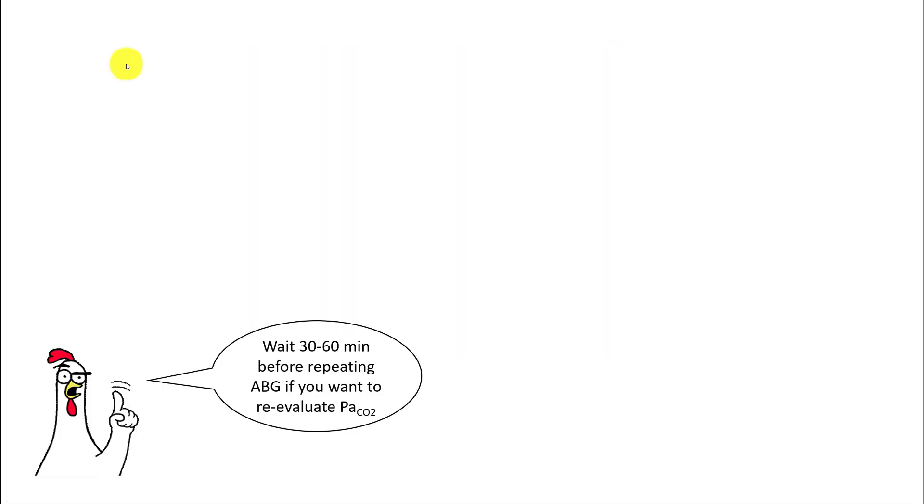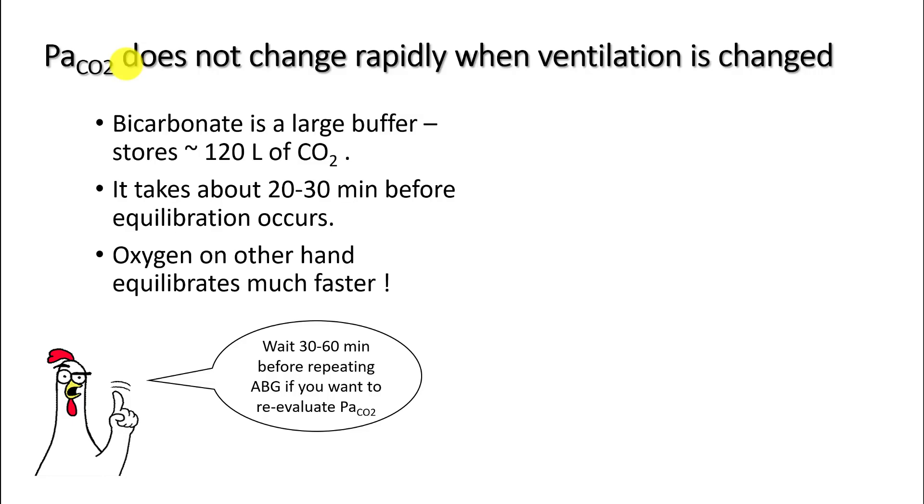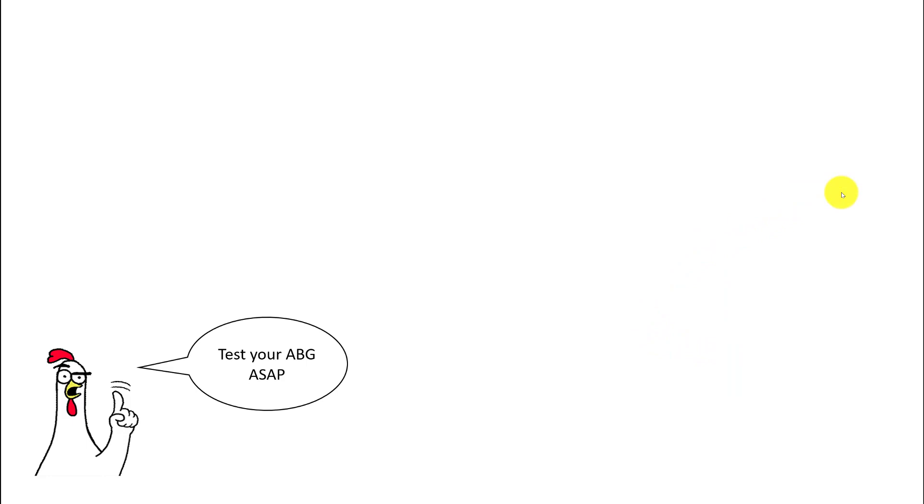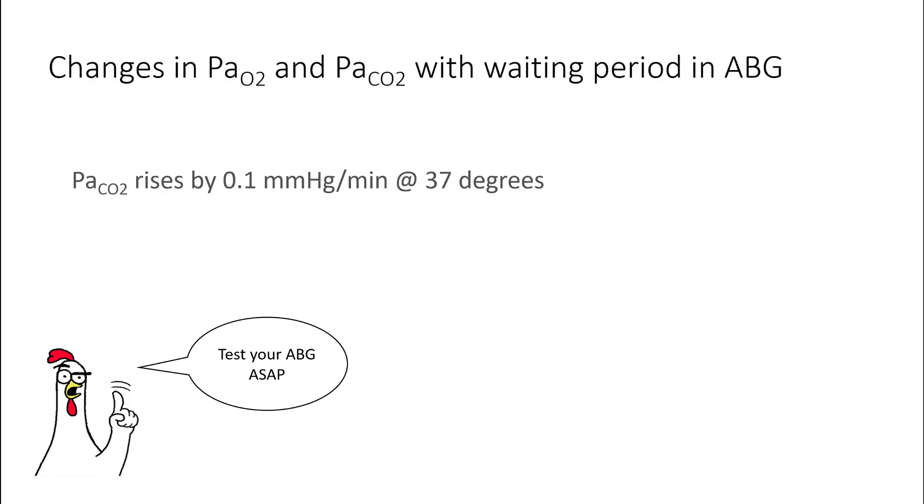When you make changes in the ventilator settings or anything to change minute ventilation, wait 30 to 60 minutes before repeating the ABG if you want to look at the PaCO2. And this happens because there are large bicarb buffer stores in your body, of the order of 120 liters, and it takes about 20 to 30 minutes before the equilibration of CO2 occurs. Oxygen, on the other hand, equilibrates much faster. So if you increased somebody's minute ventilation, you can see that the CO2 equilibrates in around 30 minutes, and if you have decreased somebody's minute ventilation, it can take up to an hour. Try to test your ABG as soon as possible, because PaCO2 rises by 0.1 millimeters of mercury per minute at 37 degrees, and PaO2 drops by 1 to 2 millimeters of mercury per minute at 37 degrees.